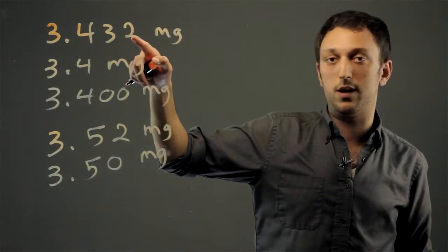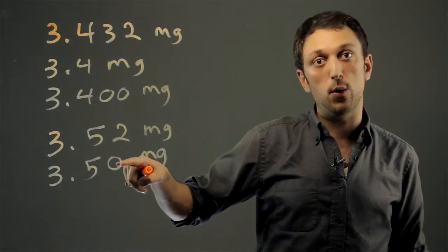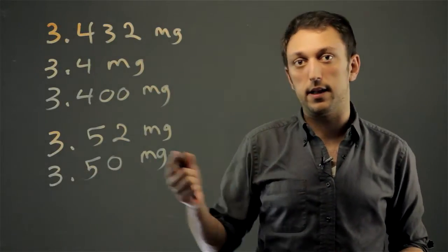when I had all the way to the thousandths place, I have two trailing zeros. When I go to the hundredths place, I decided to put one trailing zero. And that's the difference between the trailing zeros.